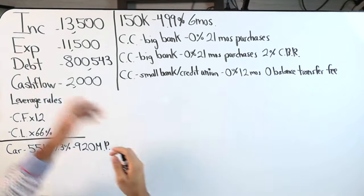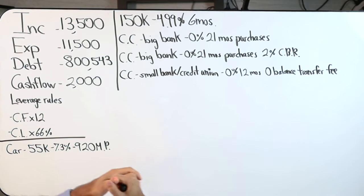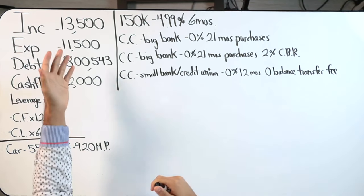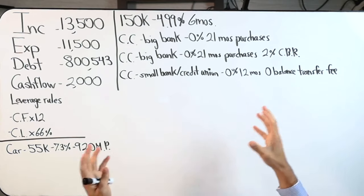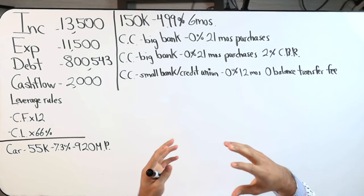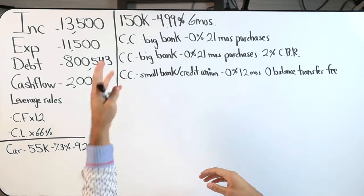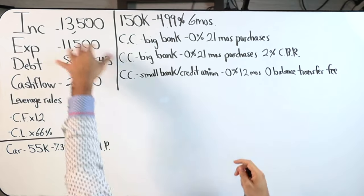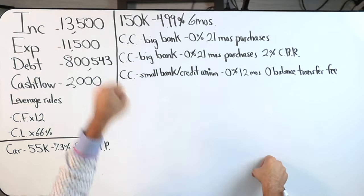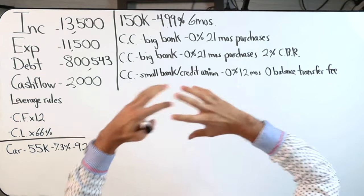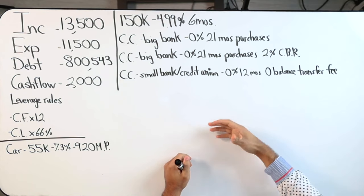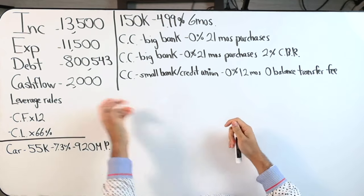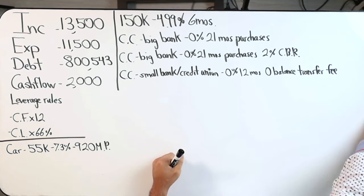Let's start here. Take it to the whiteboard. Four major numbers. Person making $13,500 a month, expenses at $11,500. This accounts for everything - cost of living, all debt payments, unexpected, miscellaneous, giving, tithing, saving, investing. All included in the $11,500. Leaving us with a net cashflow of $2,000.